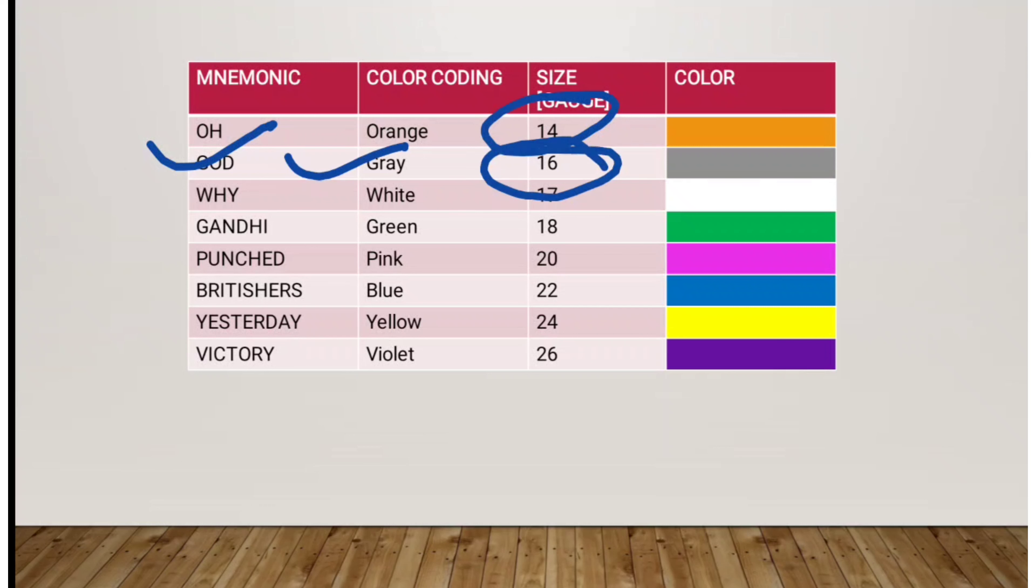White is 17 gauge. Then GANDHI corresponds to Green, which is 18 gauge. Then again add 2 and you'll get PUNCHED is for Pink, which is 20 gauge. Then BRITISHERS